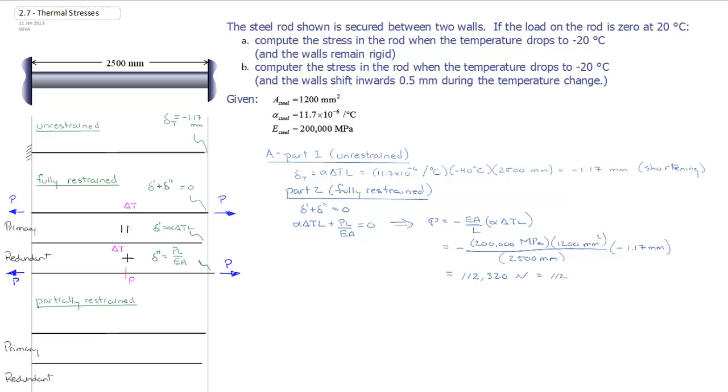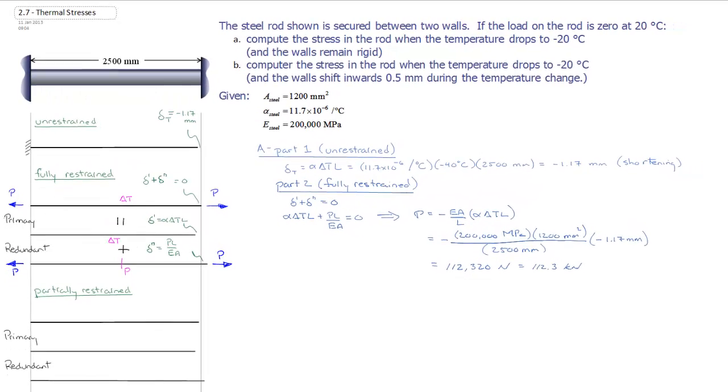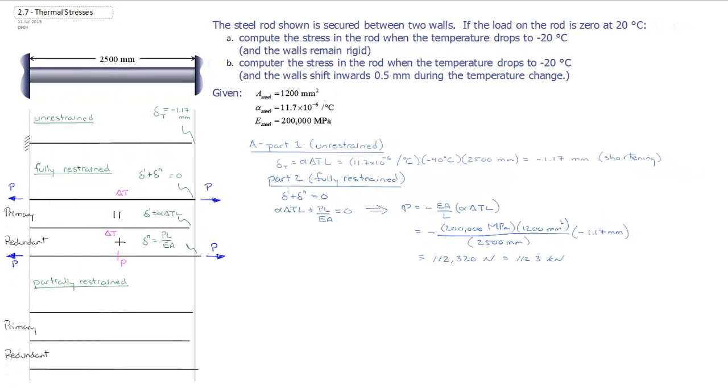And that allows us to derive that the reaction force in the fully restrained system is equal to 112,320 newtons or 112.3 kilonewtons. Now having worked through it, rather than just putting the equation that we know for the load in a fully restrained system down and working it out from first principles, now we should be in a good situation to apply the same logic to our partially restrained system and hopefully be able to solve it right out.